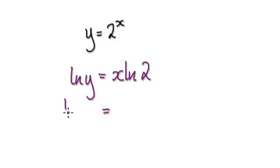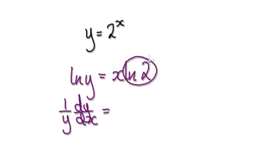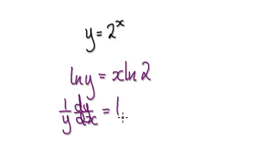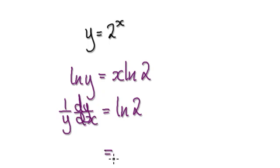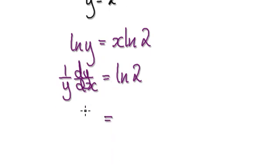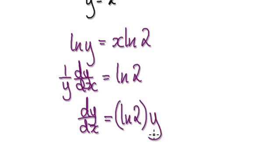When you differentiate this, it would be 1 over y, and then you've got your dy by dx. Don't forget this thing here is a constant — it's just a number. So when you differentiate this with respect to x, it would just give you natural log of 2. So now you times both sides by y, which gives you dy by dx equals natural log of 2 times y.